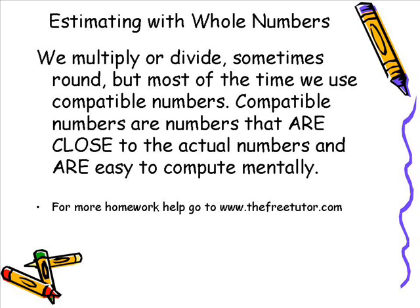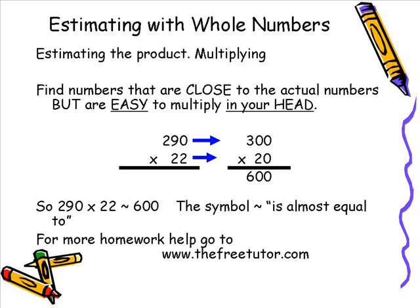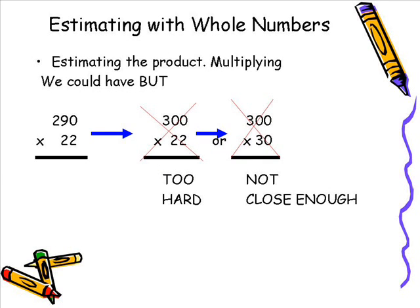When we multiply or divide, sometimes we round, but most of the time we use compatible numbers — numbers that are close to the actual numbers and are easy to compute mentally. For example, when we multiply 290 times 22, we want to find numbers close to the actual numbers that are easy to multiply in your head. So 290 becomes 300 and 22 becomes 20, and 300 times 20 is 6,000. So 290 times 22 is approximately 6,000. We could have used different numbers like 300 times 22 or 300 times 30, but 300 times 20 is the closest and easiest. I would encourage you to review these slides when using compatible numbers.